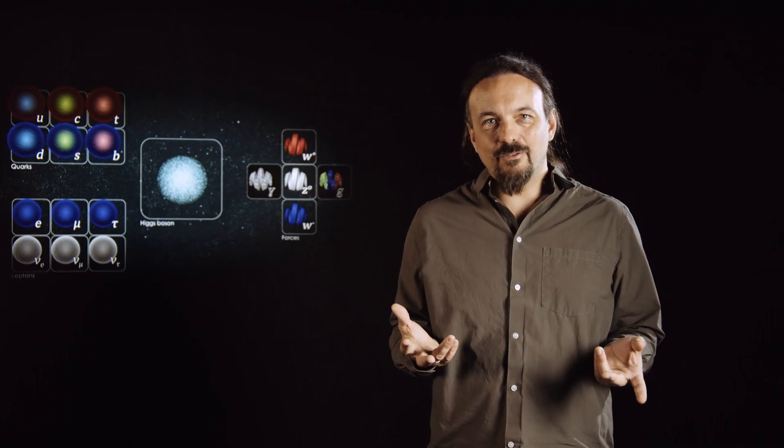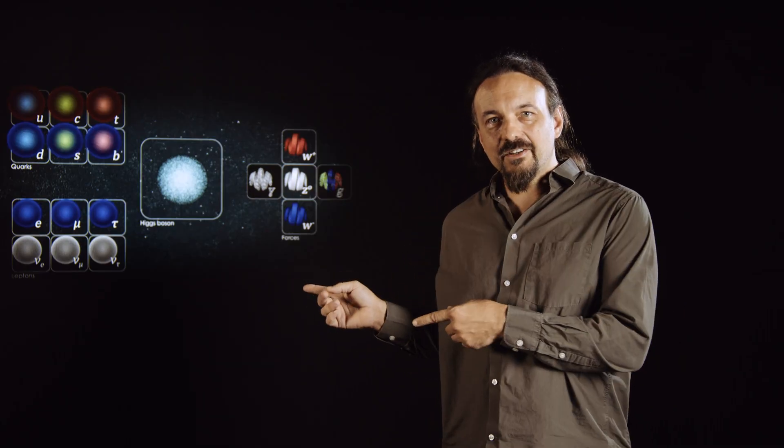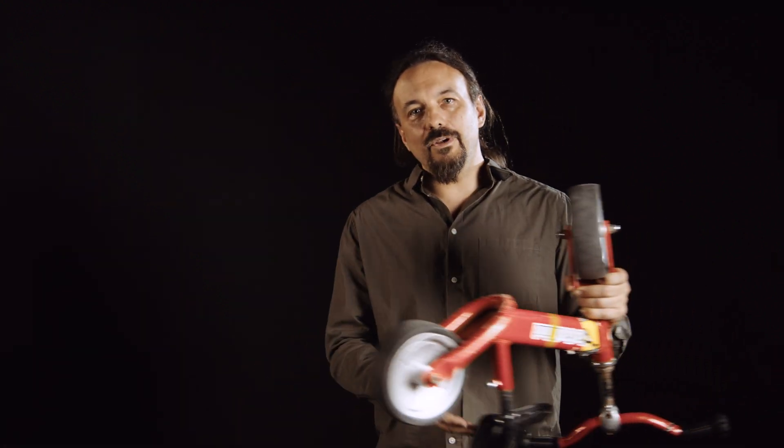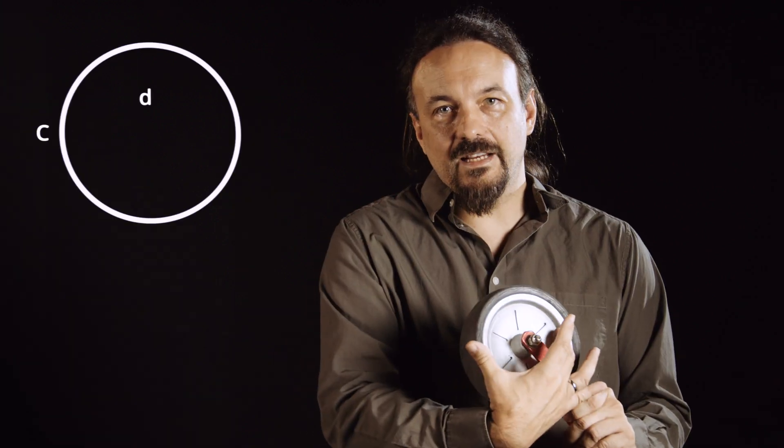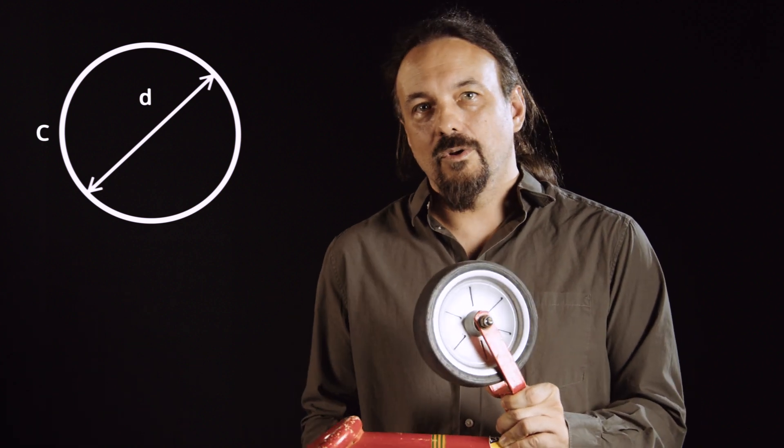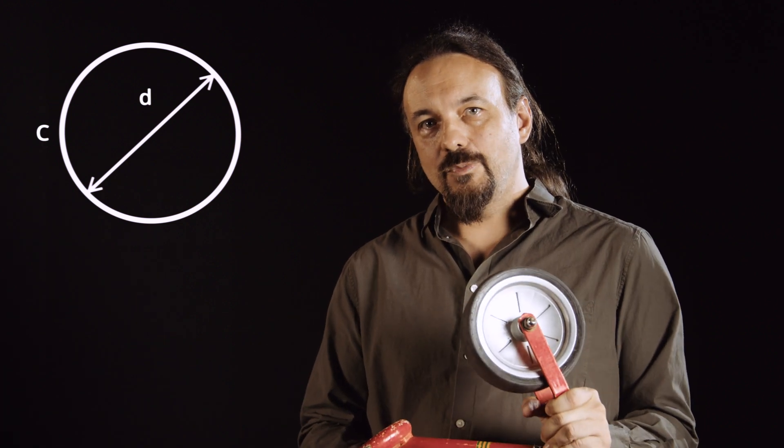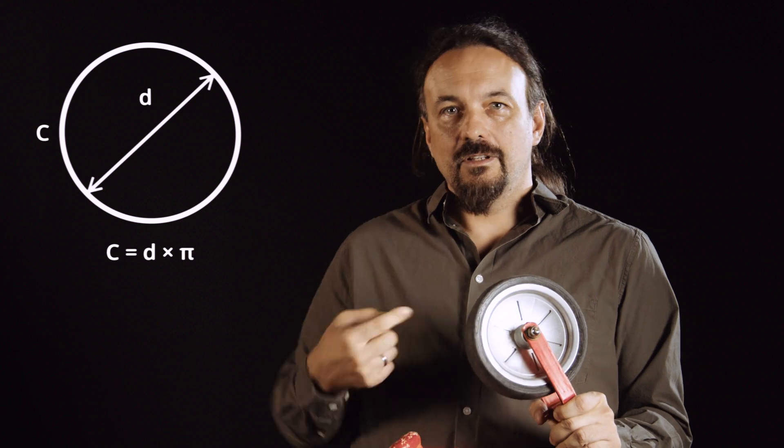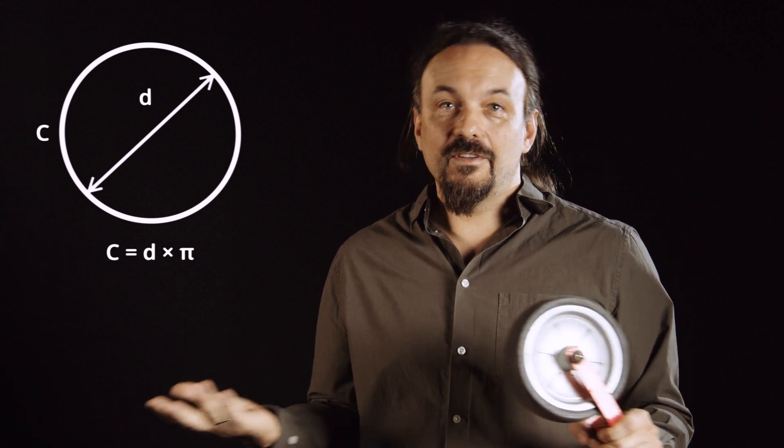Our best description of particles and their interactions, the standard model of particle physics, is over-constrained. Now, what do I mean by that? Well, if I take a wheel and I measure its diameter and I measure its circumference, well then of course the circumference has to be equal to the diameter multiplied by pi. If it's not, then either I'm measuring wrong or this is not a wheel. And that's what we call an over-constrained system.